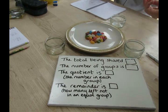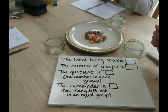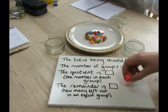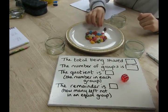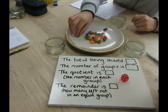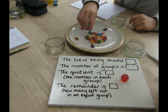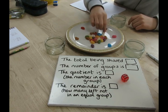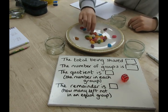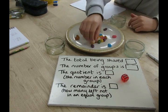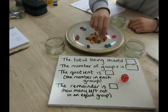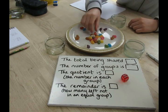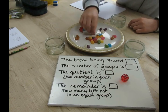Luke's going to go first and he's going to roll the dice. He's thrown a six, so he's going to share the 31 jelly beans out into six equal groups. Luke's prediction: he knows he's going to get a remainder because 31 is not a multiple of six. He thinks of a number just below 31 that is a multiple of six — that's 30 — so he's probably going to get a remainder of one.